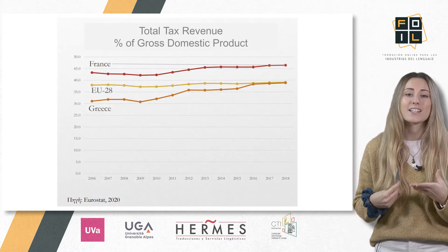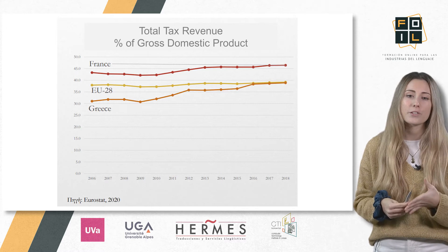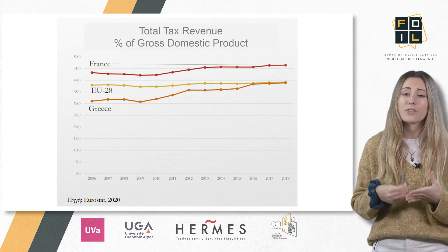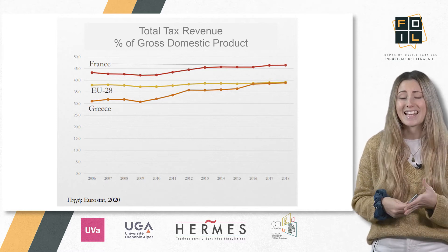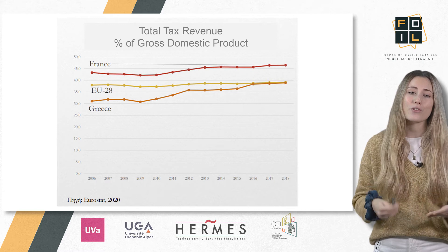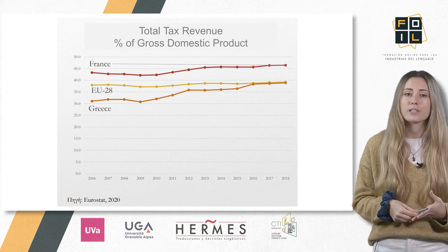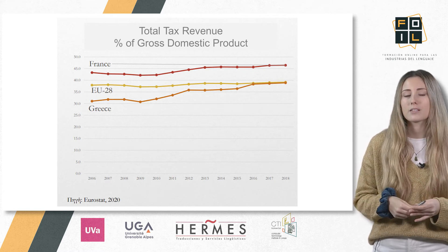In Greece, the total tax revenue increased considerably between 2006 and 2018, from a bit more than 30% to almost 40% of the gross domestic product.